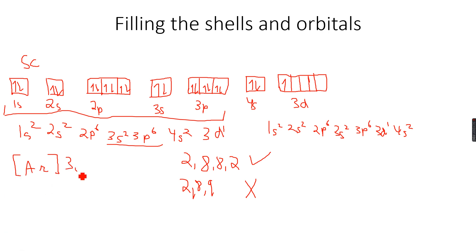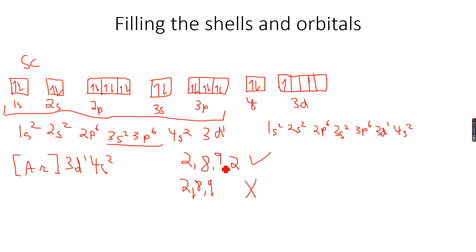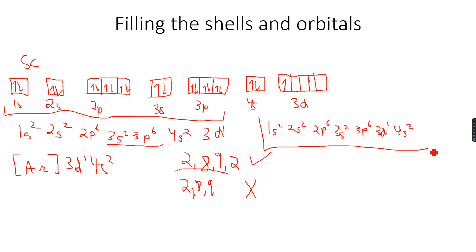The electronic configuration in conventional notation is 2, 8, 9, 2. We have 9 electrons in the third shell because 1 plus 1 is 2, 2 plus 6 is 8, 8 plus 1 is 9. However, you will no longer write the conventional electronic configuration — you'll always be writing the full orbital notation.